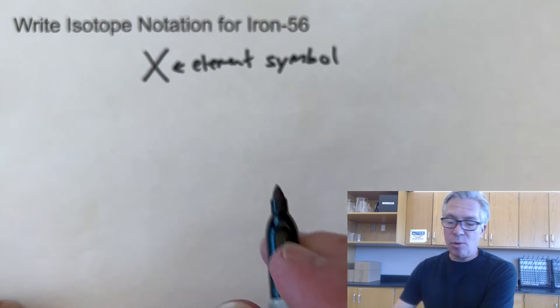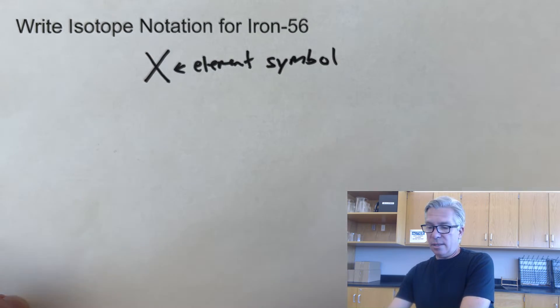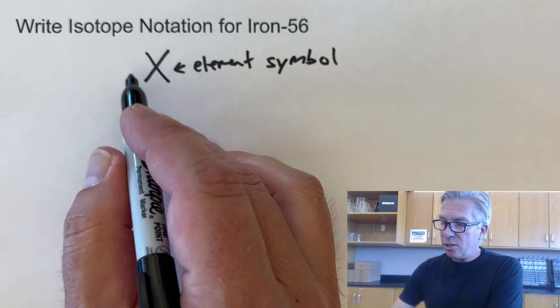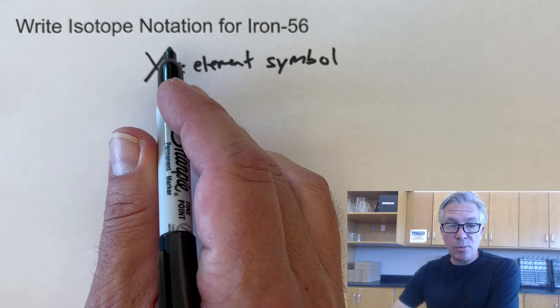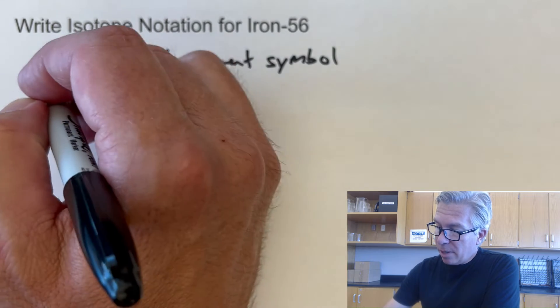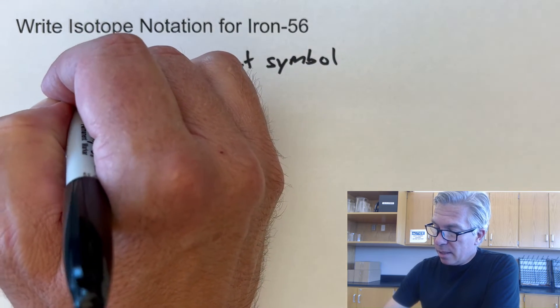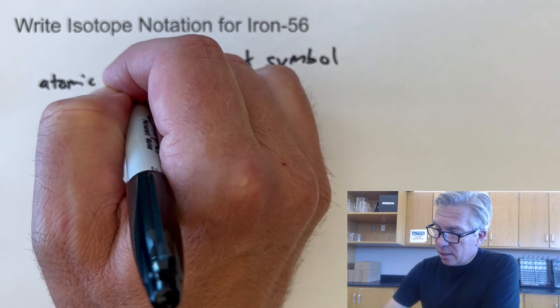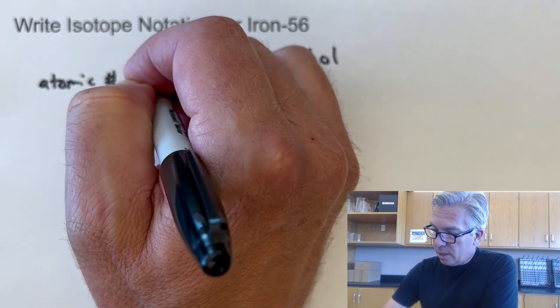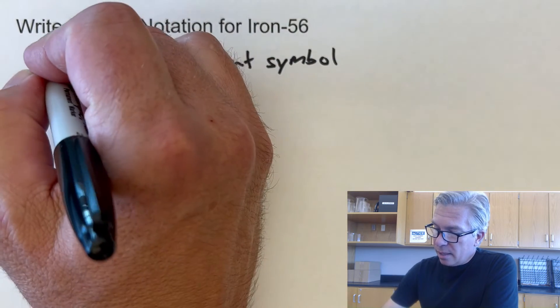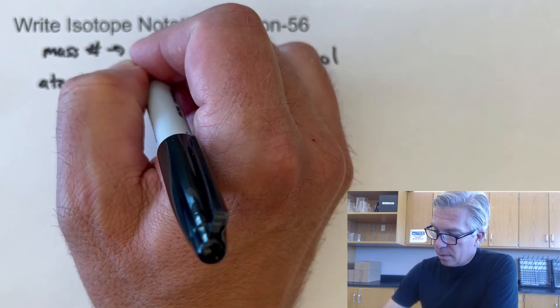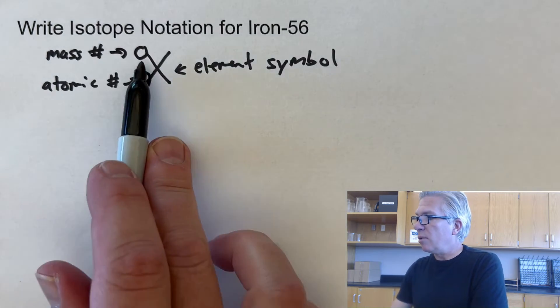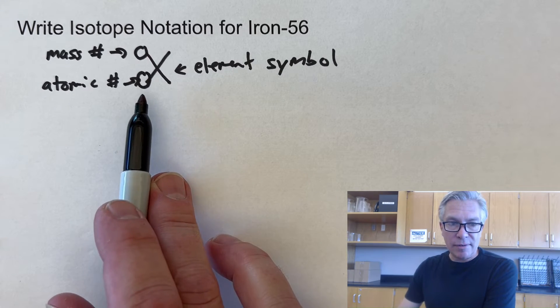There is no element X, but we're just going to use that as our example. But then you're going to see two numbers to the left of it. And sometimes a number up and to the right. We'll get to those when they have charges. But the bottom number is going to be the atomic number. And that's going to go here in this little spot. And then the mass number is going to go in the top spot, right up there.